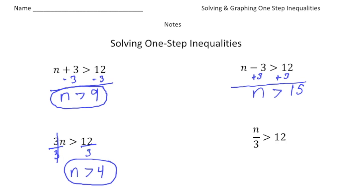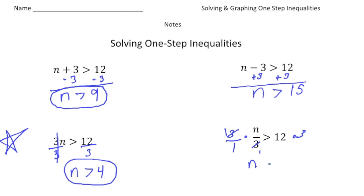Later on in this unit study, you're going to learn more about a golden rule when it comes to inequalities, so put a big star over here — we'll come back to this part later on. Last but not least, we have a number divided by 3 is greater than 12. The opposite of dividing by 3 is multiplying by 3, so we multiply both sides by 3. When you have fractions you can cross-reduce, so the 3s cancel and become 1s. Now we just have n on this side, which is greater than 12 times 3, which is 36. So here are the solutions to the four inequality problems.